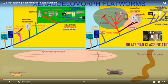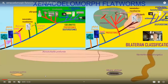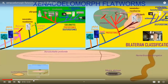It was once thought that the primitive branch included not only planaria and the parasitic tapeworms and flukes, but also a group called acoels. Even after this reorganization, the acoels are consistently the most primitive bilaterian.